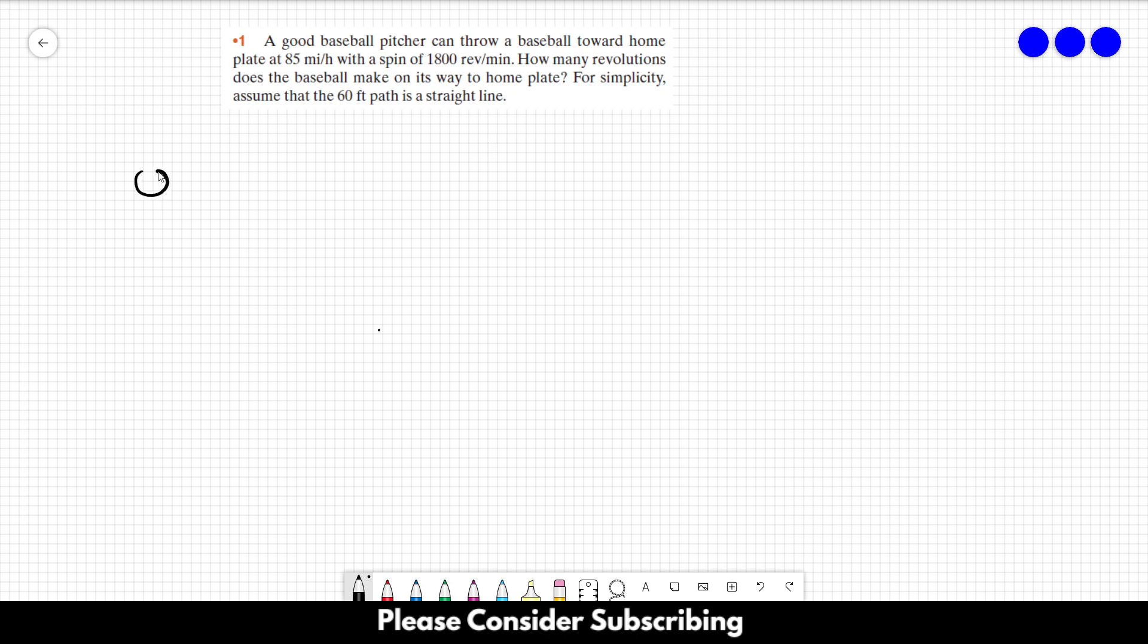Okay, so there is a ball over here with some initial velocity, let's just call it V, which is equal to 85 miles per hour. So that's the initial speed of the ball. And we have a target here, which is the home plate.